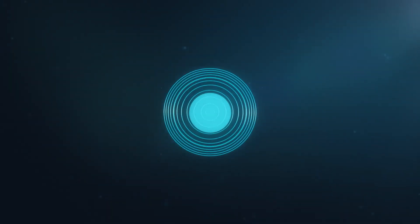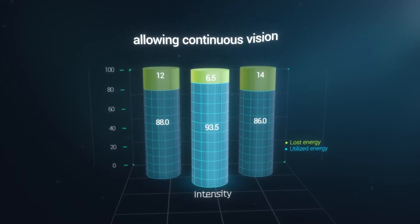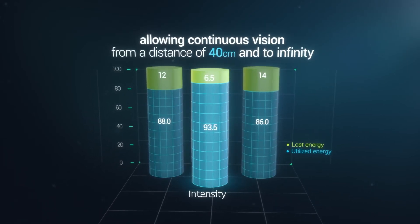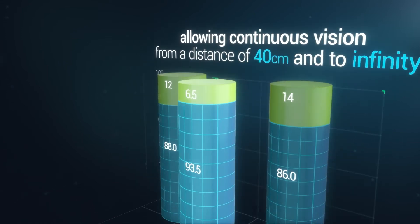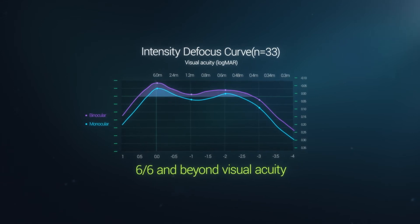Intensity provides 46% less light loss compared to its competitors, allowing continuous vision starting from a distance of 40 centimeters to infinity with a defocus curve allowing 6-6 and beyond visual acuity.